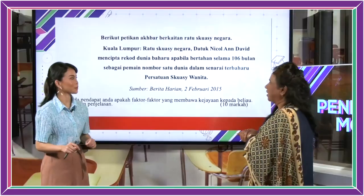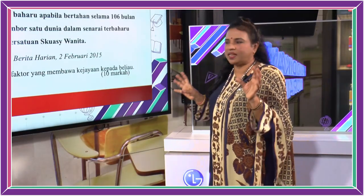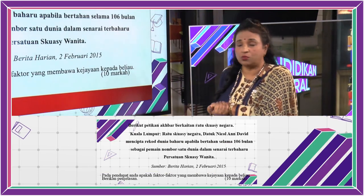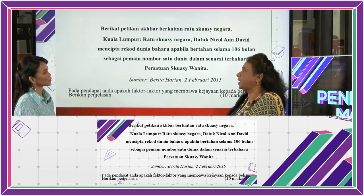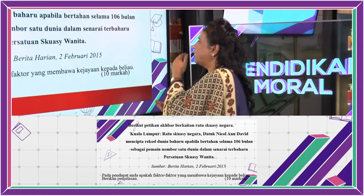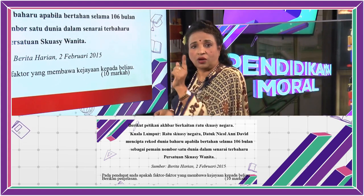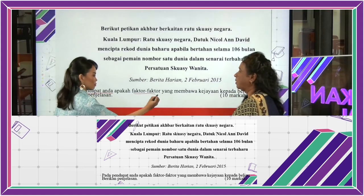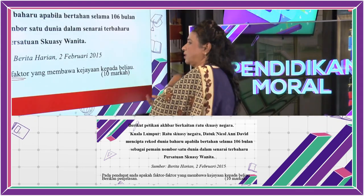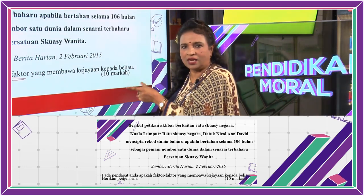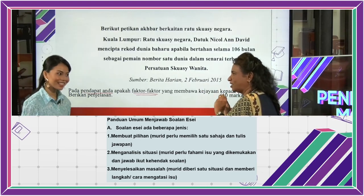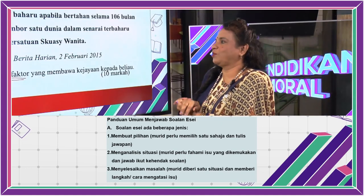Kita lihat selanjutnya soalan AC. Soalan ini selalunya memberi satu penyataan dan memberikan 10 markah di bawah. Ratu Skuasy Negara, Dato' Nicole David, mencipta rekod dunia apabila bertahan selama 106 bulan sebagai pemain nombor satu dunia dalam senarai Persatuan Skuasy Wanita. Soalannya: pada pendapat anda, apakah faktor-faktor kejayaan? Faktor ialah teknik yang digunakan untuk berjaya. Soalan ini tak ada nilai secara eksplisit, tapi cikgu sebut tulis sekurang-kurangnya 4 atau 5 nilai, dan wajib tulis nilai rasional dan bertanggungjawab.